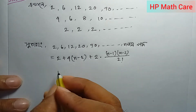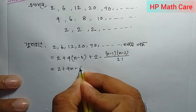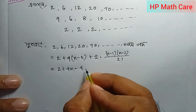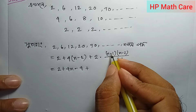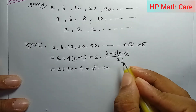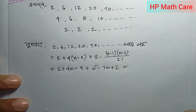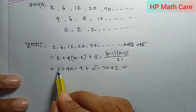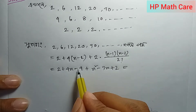If you want to calculate the same thing, then what is it? 2 plus 4n minus 4 — 2 factorial meaning 2, then 2 to 2. If you want to write the same thing, then: 2 plus n minus 3, n plus 2, n minus 1, n minus 2. If you want to write the same thing, n minus 1 times n minus 2 is equal to 2 plus 2 to 4 minus 4.